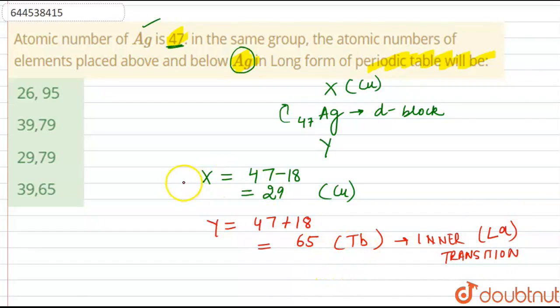So the element present is basically 47 plus 32, which is equals to 79 that is Au.